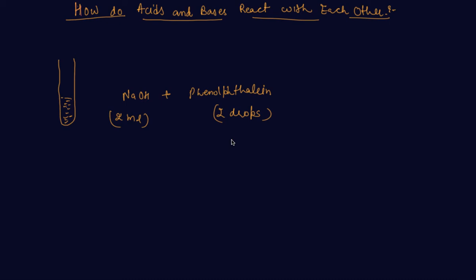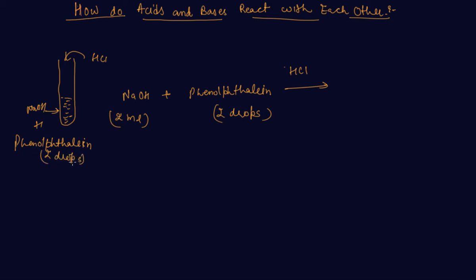Now observe the color of the solution. Drop by drop, add HCl solution into the test tube containing NaOH plus phenolphthalein (2 drops). You will see that the color of the solution changes. Why did the color of the phenolphthalein change after the addition of an acid?